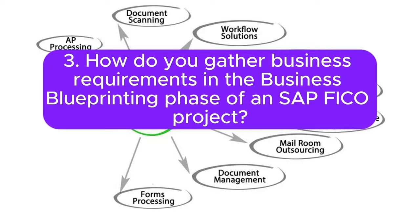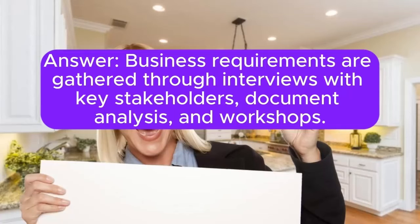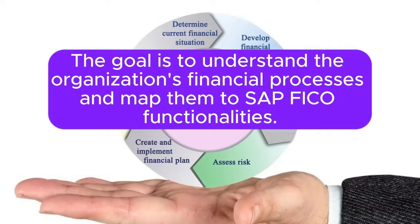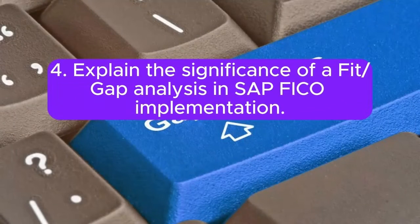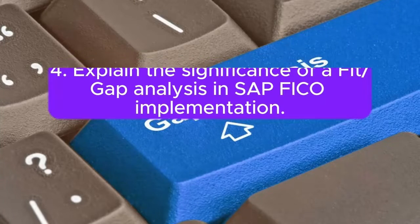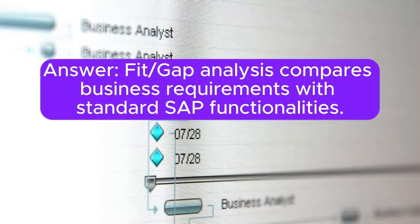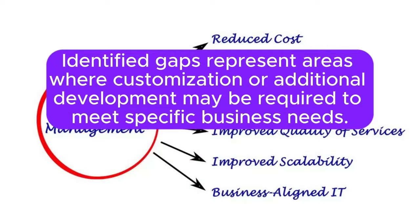Question 3: How do you gather business requirements in the business blueprinting phase of an SAP FICO project? Business requirements are gathered through interviews with key stakeholders, document analysis, and workshops. The goal is to understand the organization's financial processes and map them to SAP FICO functionalities. Question 4: Explain the significance of a fit-gap analysis in SAP FICO implementation. Fit-gap analysis compares business requirements with standard SAP functionalities. Identified gaps represent areas where customization or additional development may be required to meet specific business needs.